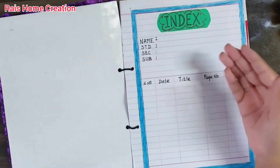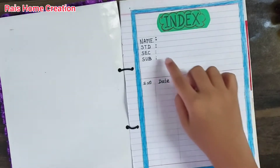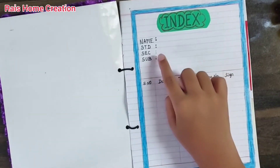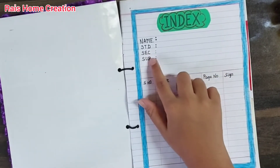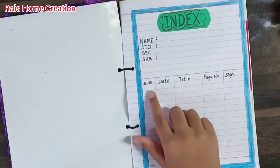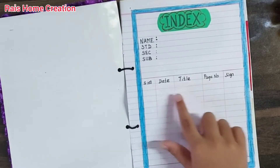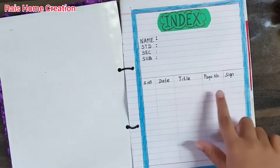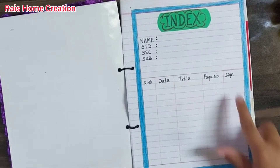The next page is the index, which contains: name, standard, section, subject, serial number, date, title, page number, and sign.